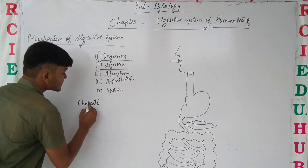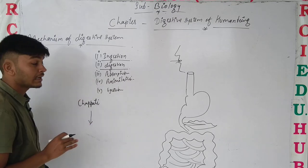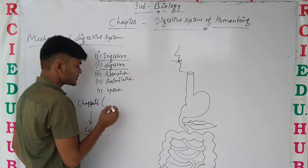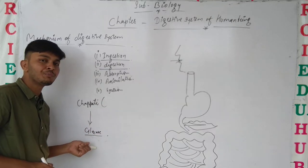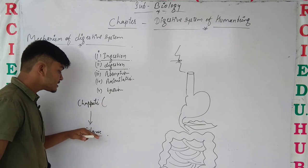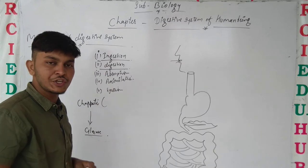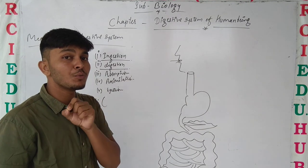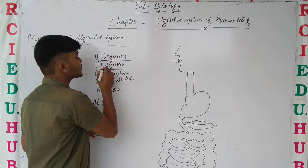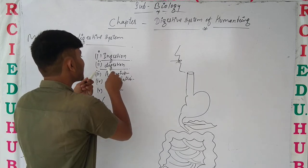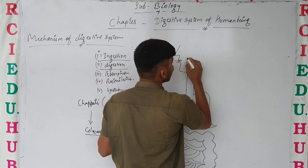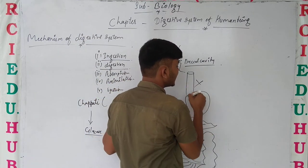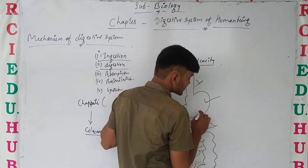Finally the food is converted into glucose. That process is known as digestion. In short, we can say complex food material is converted into simple food material. That process is known as digestion. It starts from the buccal cavity and continues to the stomach.